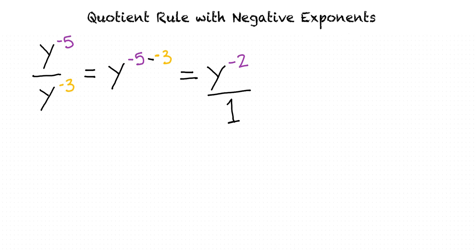So now that it's a fraction, can we move y to the negative second power to the denominator and make the exponent positive? Right. We can write this as one over y squared.